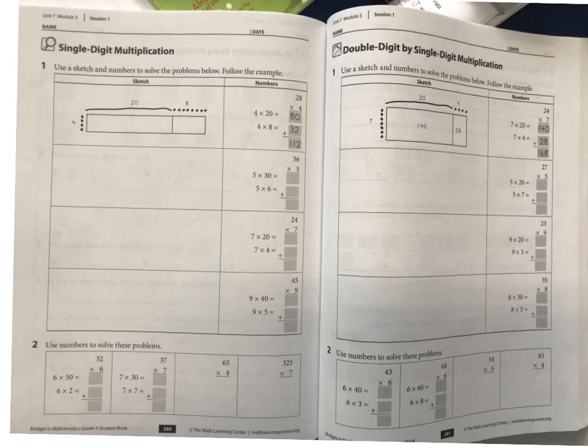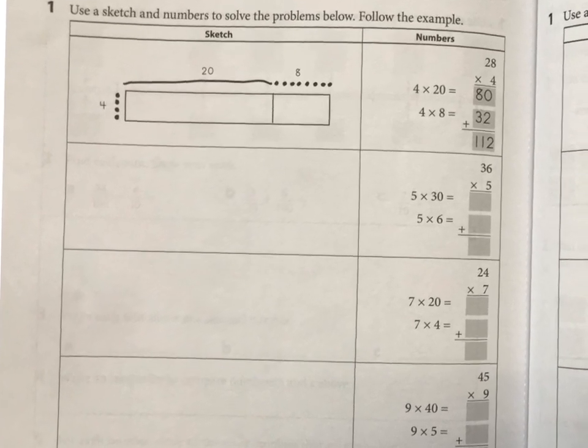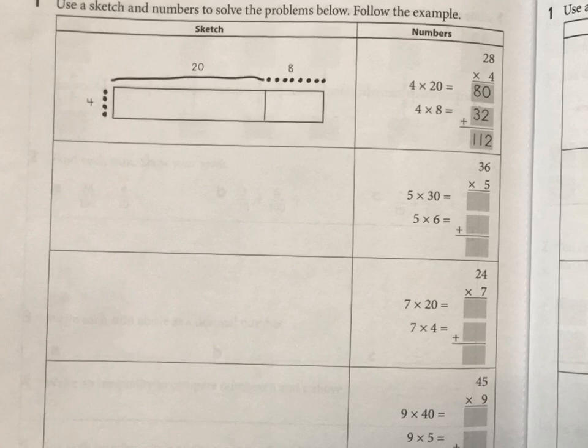For all of these here, you're basically looking at two digits times one digit, and that means you can simply draw two rectangles to illustrate the problem.